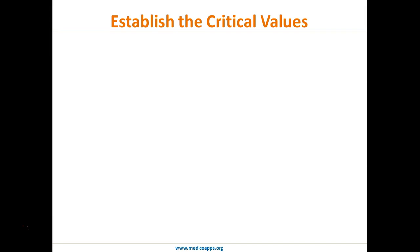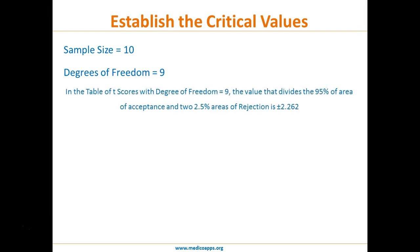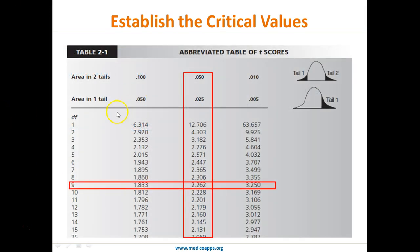The next step is establishing critical values. We will draw random fasting blood sugar samples of 10 people, so the sample size is 10 and the degrees of freedom is 9. In the t-table with 9 degrees of freedom and a two-tailed test, the value that divides the 95% area of acceptance from the 2.5% areas of rejection on each side is 2.262.